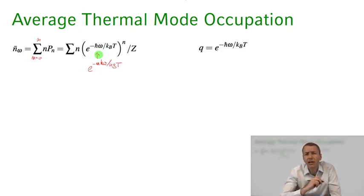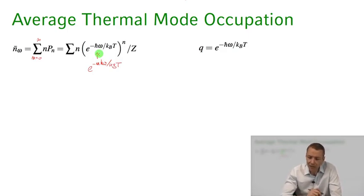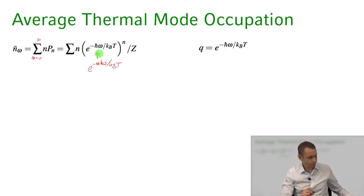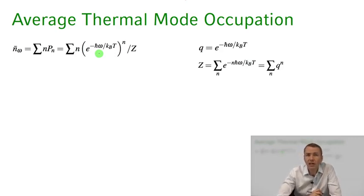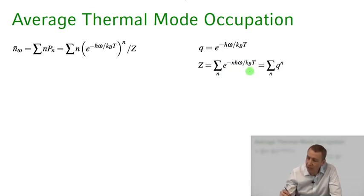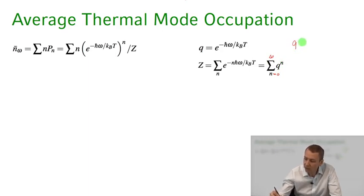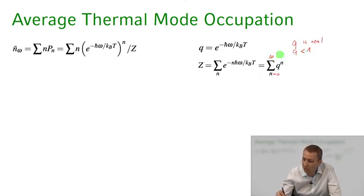To simplify the writing, we introduce the variable q which represents e to the minus ℏω divided by k_B T. The normalization factor Z is then the sum over n from zero to infinity of q to the power of n. Since q is real and smaller than one, we can use the geometric series, giving Z equals 1 divided by (1 minus q).